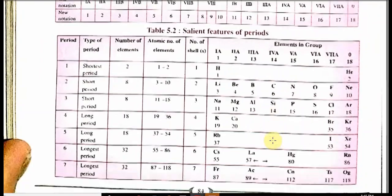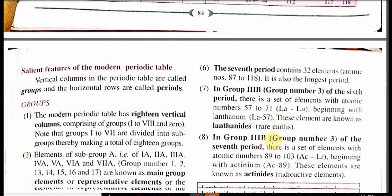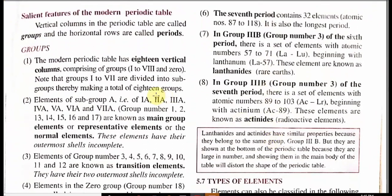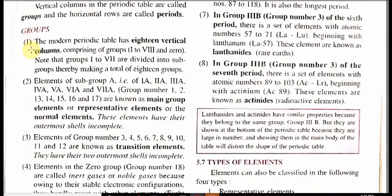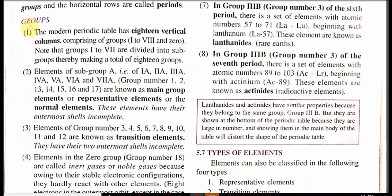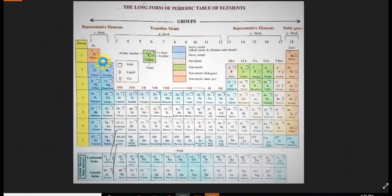This is the table we will be seeing. I will show you the periodic table many times during the chapter. Salient features of the modern periodic table: the vertical columns are called groups and horizontal rows are called periods. The modern periodic table has 18 vertical columns. You can see column 17 and 18 — so these are 18 columns — and there are 7 periods also.